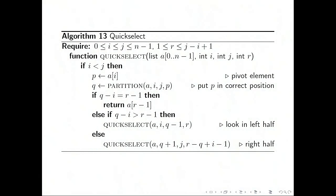So here's the pseudocode for quickselect. You require some indices - here i and j, which have to be in the right range - and you also have r, which is the order statistic we're interested in. So what we're trying to do is find the rth smallest element in the sublist starting at a[i] and going up to a[j], because we're going to apply it recursively.